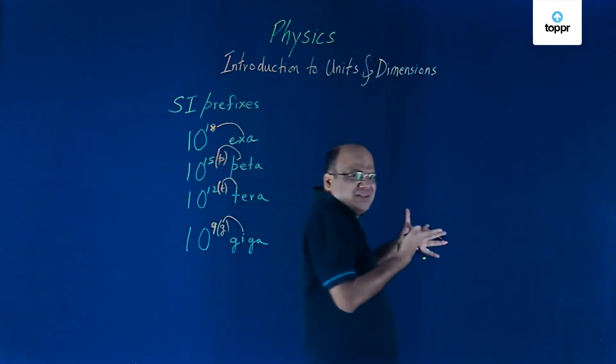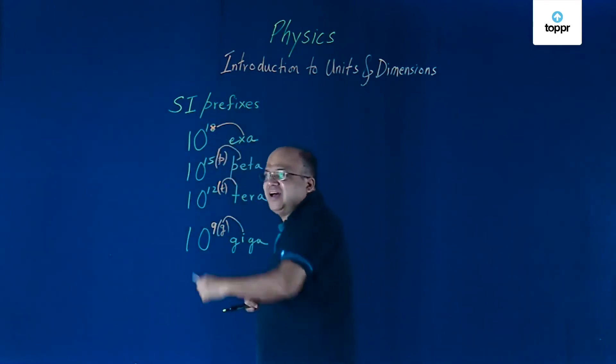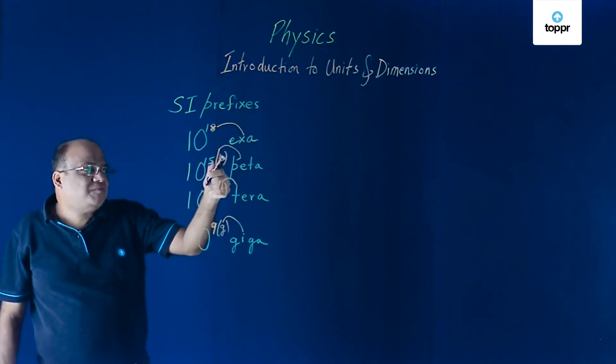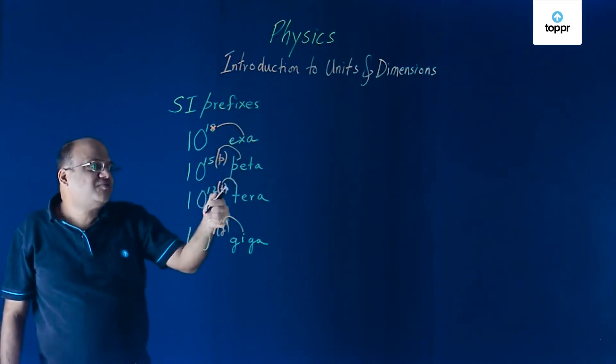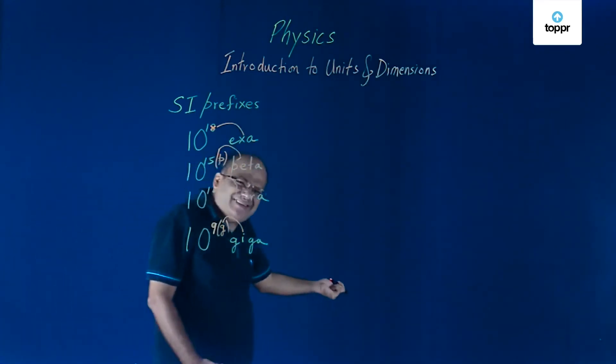So now we can remember it for the rest of our life. 18, I'll see X here, EXA. 15, 5 will remind me of PENTA, so PETA. 12 starts with T, so TERA. 9 looks like G, so GIGA. Easy.